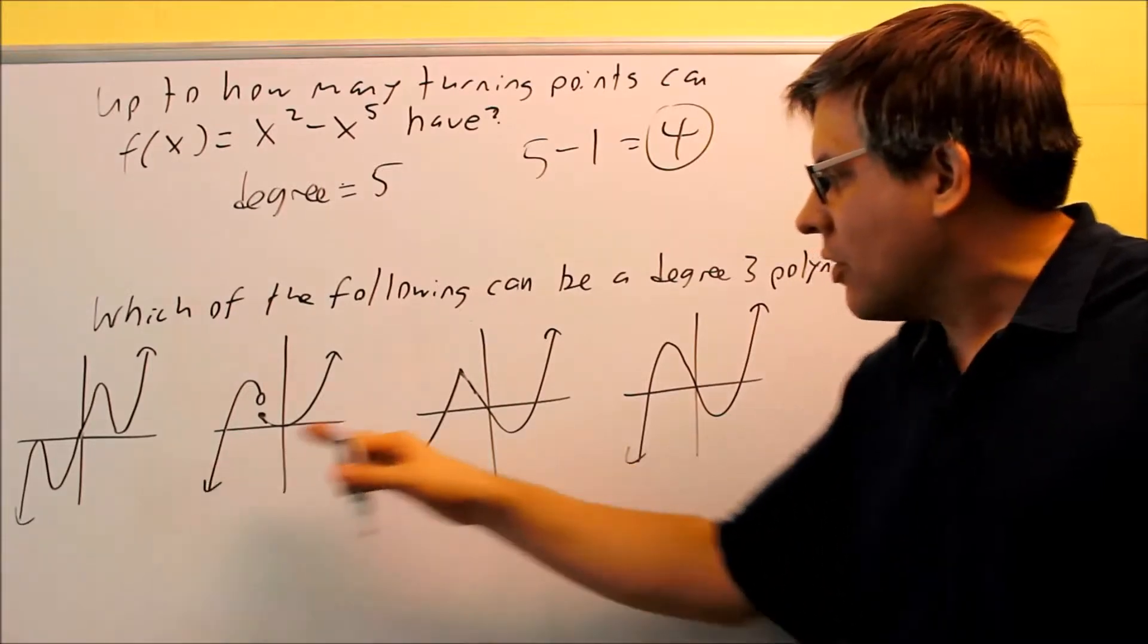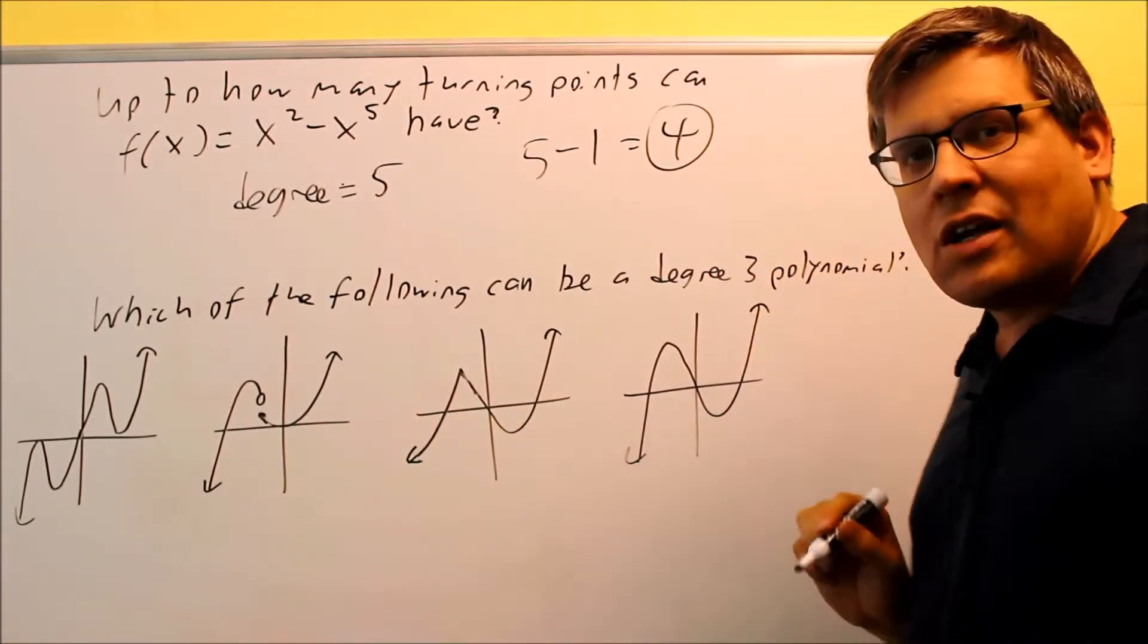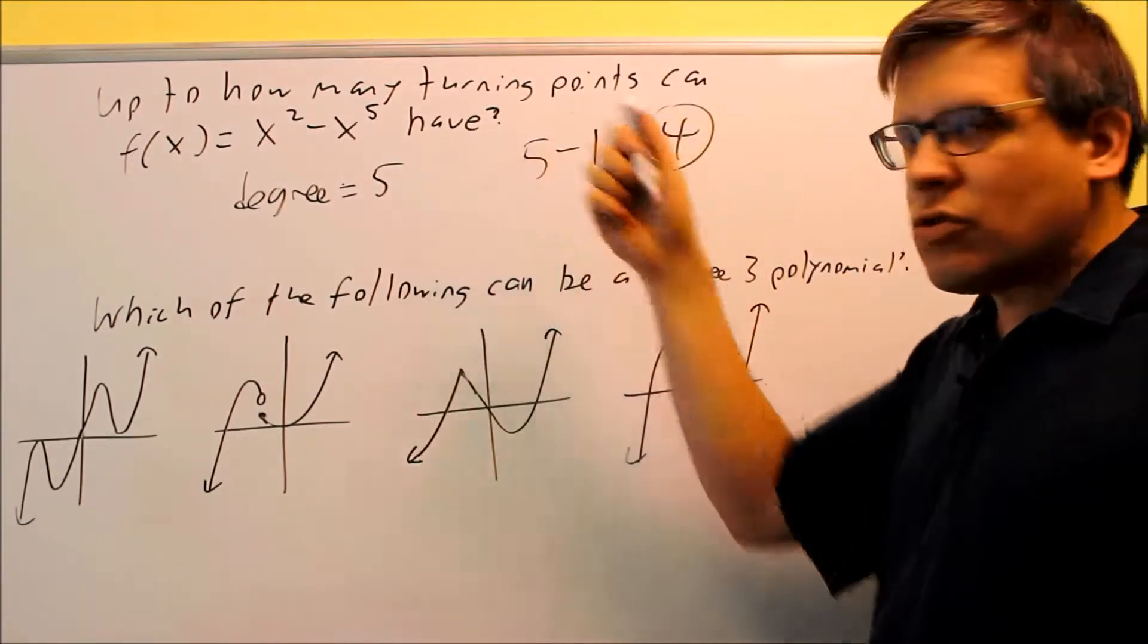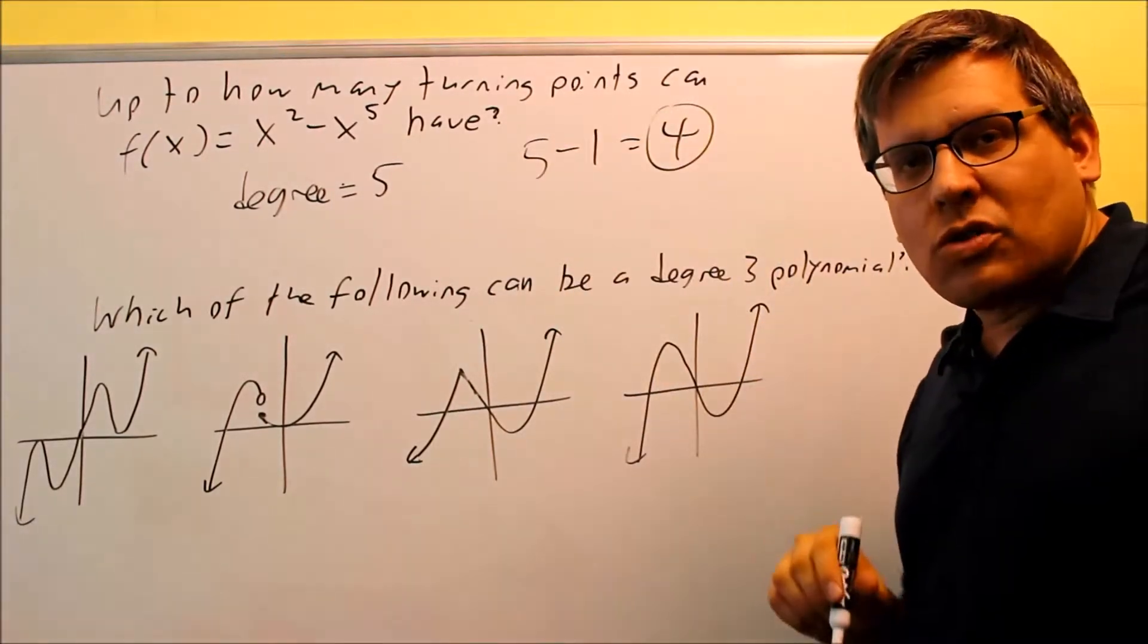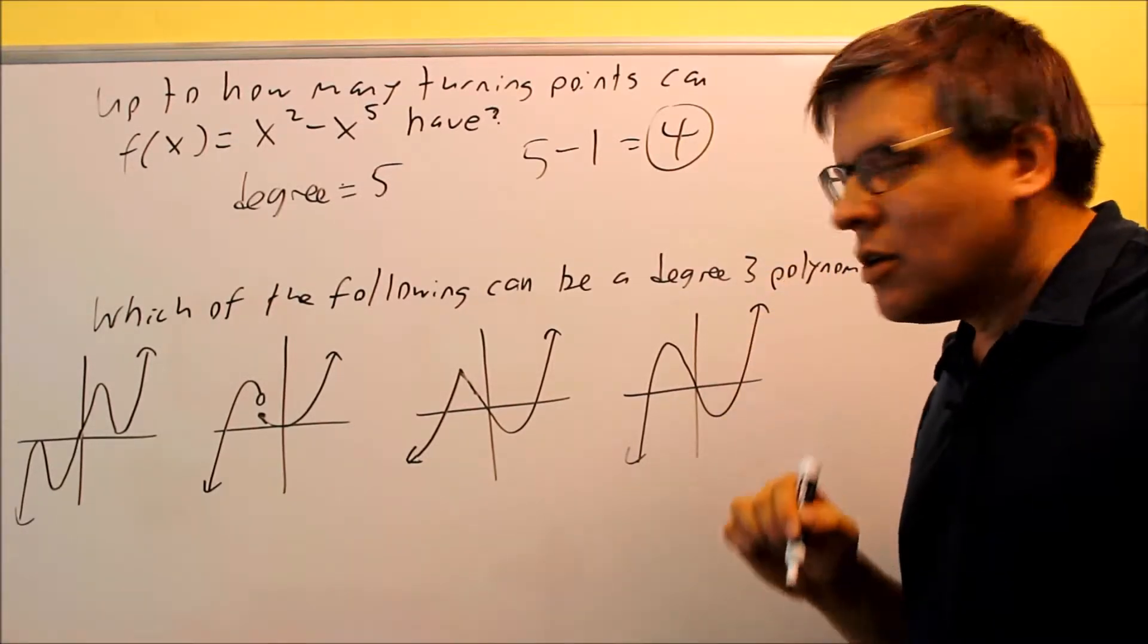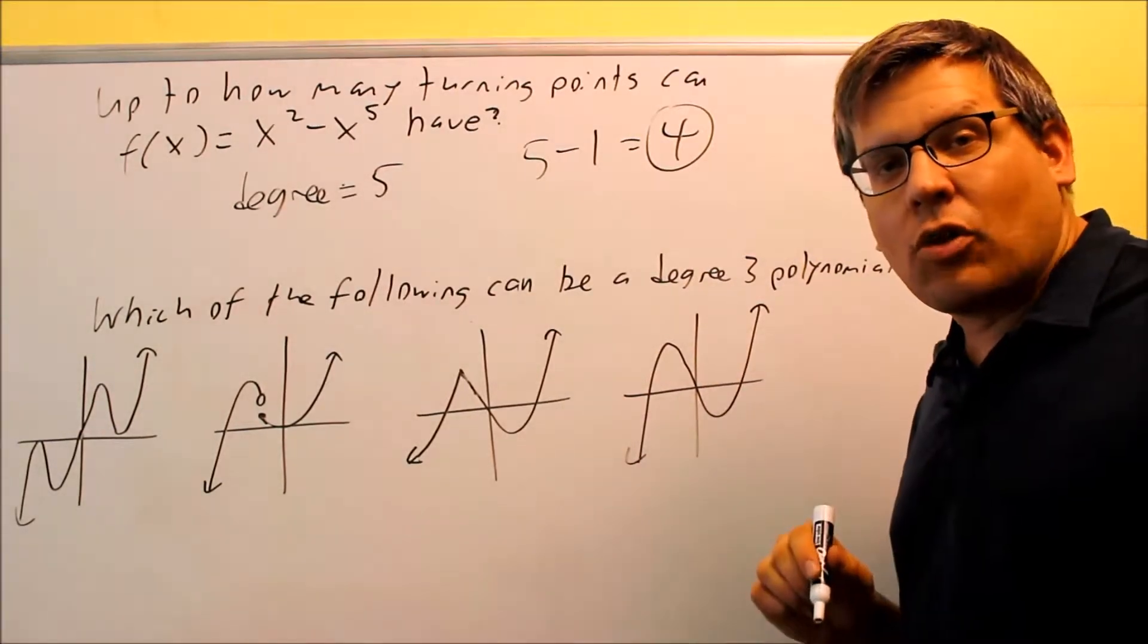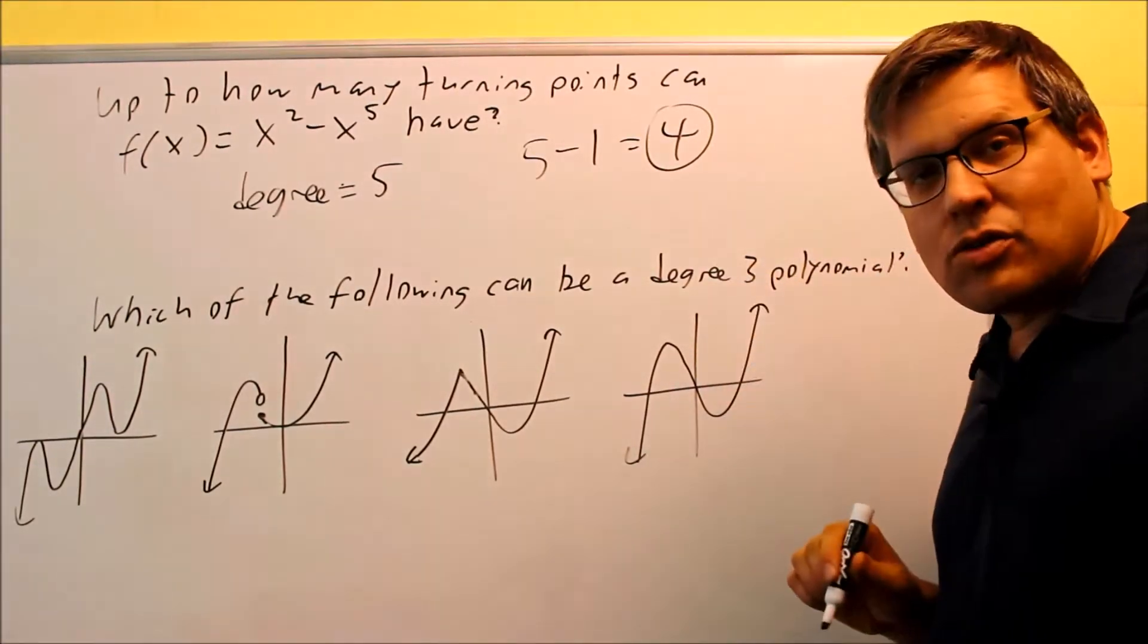And we also have to make sure that it has the correct number of turning points as well. So if we take a look at these different examples, these different graphs here, we're looking for degree 3. We just mentioned before that when you do turning points, the most turning points it can have is going to be your degree minus 1. So that means that for a degree 3 polynomial, I cannot have any more than 2 turning points, 3 minus 1.